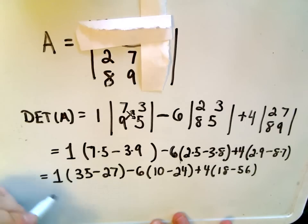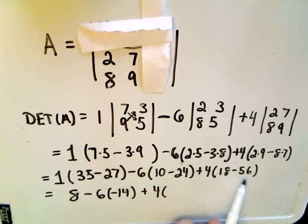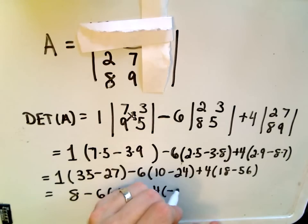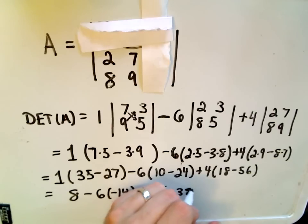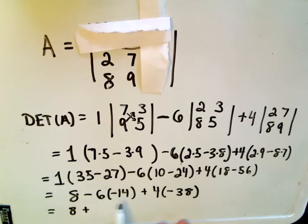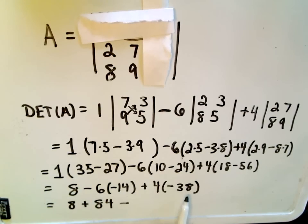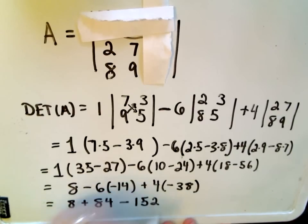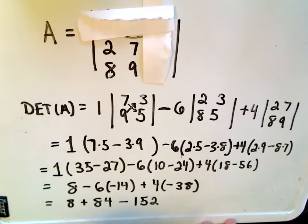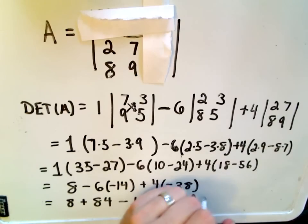Now we're almost there, just computation. We get 1 times (35 minus 27), minus 6 times (10 minus 24), plus 4 times (18 minus 56). So 35 minus 27 is 8. 10 minus 24 is negative 14, giving us negative 6 times negative 14, which is 84. And 18 minus 56 is negative 38, times 4 is negative 152. So 8 plus 84 gives us 92 minus 152.